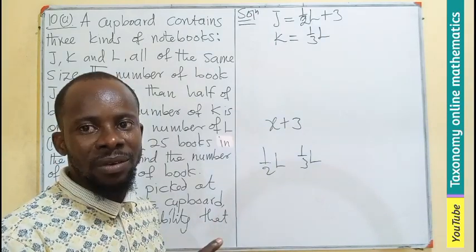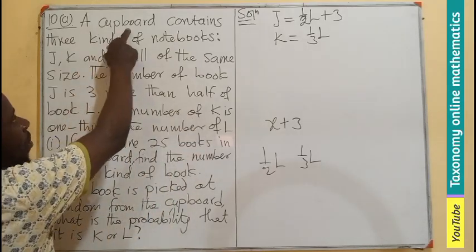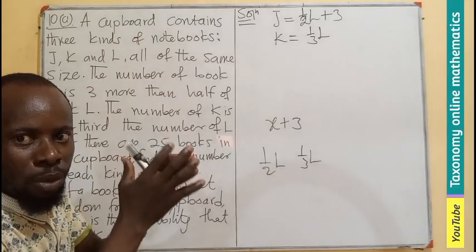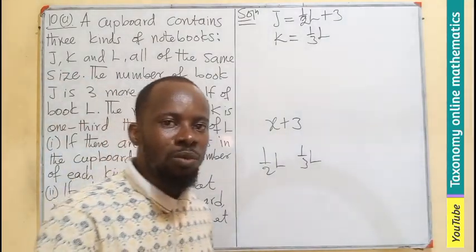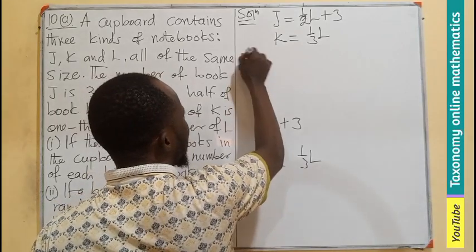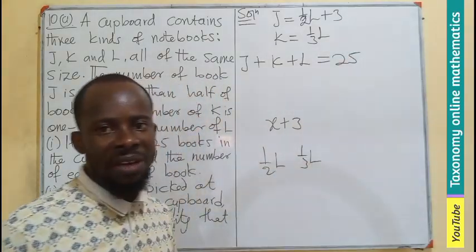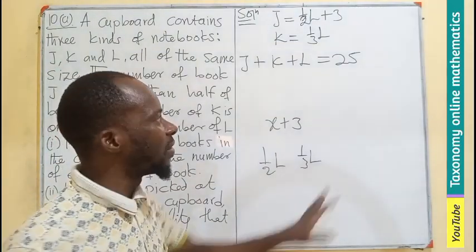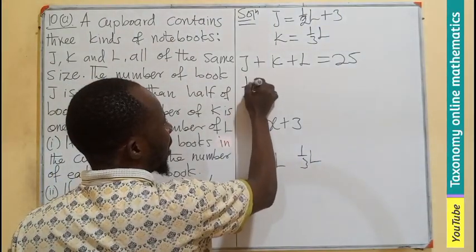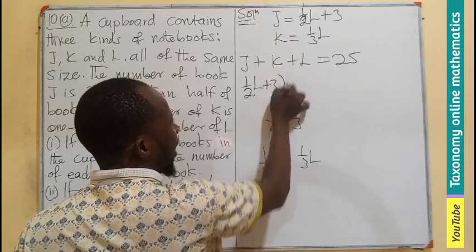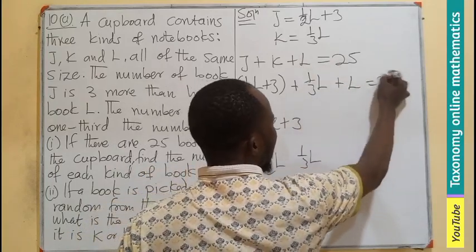Since there are 25 books total, all three books together must equal 25. We write: J + K + L = 25. Substituting the expressions: one-half L plus three, plus one-third L, plus L equals 25.